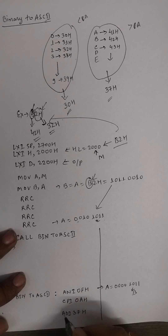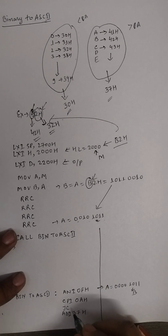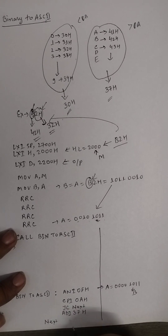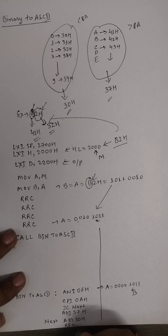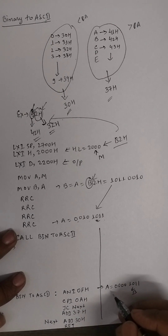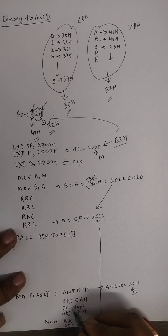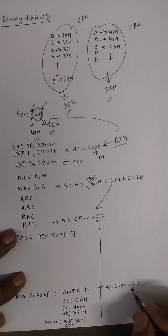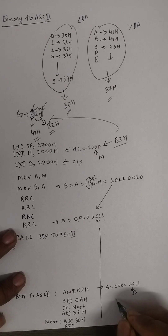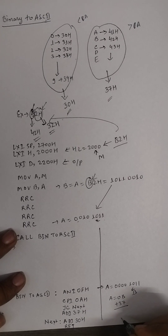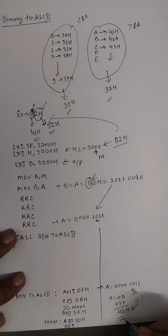If the number is less than 10, a carry is generated by the comparison and JC NEXT causes a jump to the NEXT label, where ADI 30H is executed and then a return. In our current case, B value is greater than 10, so we directly add 37H. The result: 0B + 37H = 42H. So the ASCII code of B is confirmed as 42H.